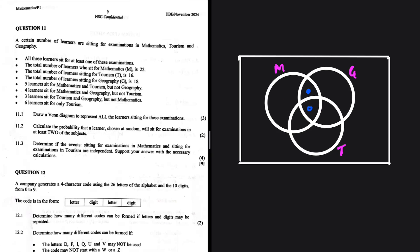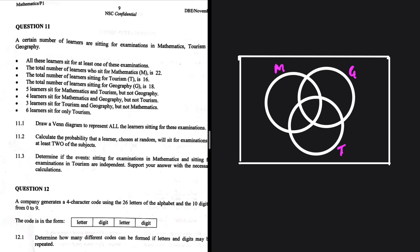Starting from the inner numbers is easy; if you start from the outer numbers it becomes a little complicated. The first bullet point states all learners sit for at least one examination, so there is no learner outside the diagram. We've used that point. The second bullet point says the total number of learners who sit for mathematics is 22.